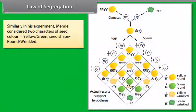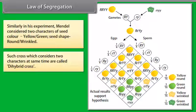Similarly, in his experiment, Mendel considered two characters: seed color — yellow and green — and seed shape — round and wrinkled. Such a cross which considers two characters at the same time is called a dihybrid cross.